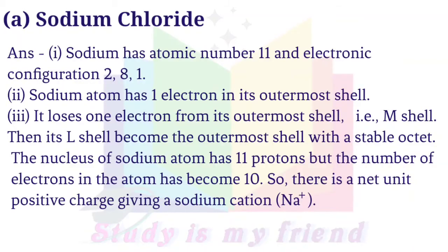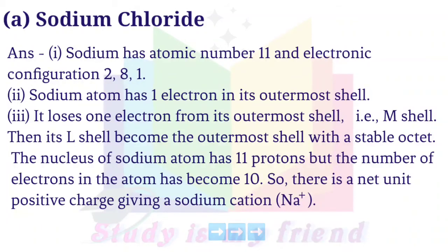Answer: 1. Sodium has atomic number 11 and electronic configuration 2, 8, 1. 2. Sodium atom has one electron in its outermost shell. 3. It loses one electron from its outermost shell (M-shell). Then its L-shell becomes the outermost shell with a stable octet.